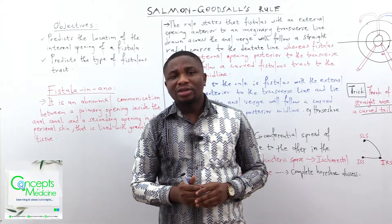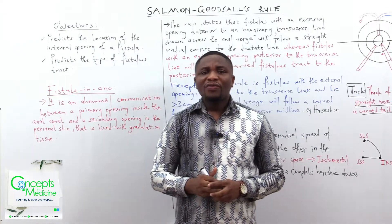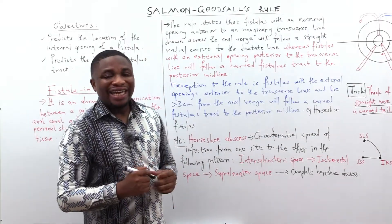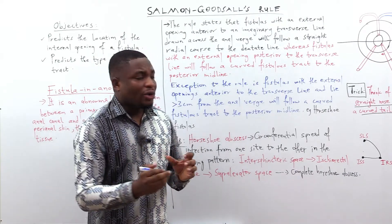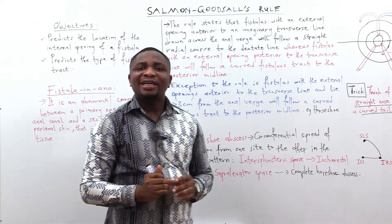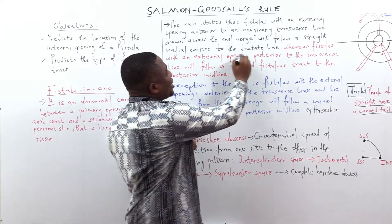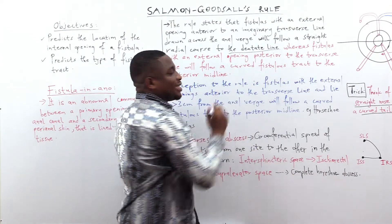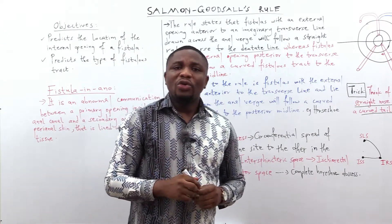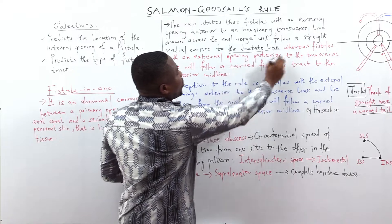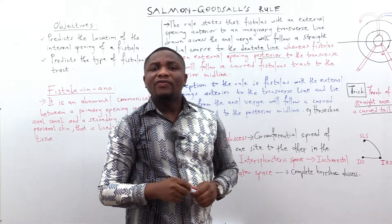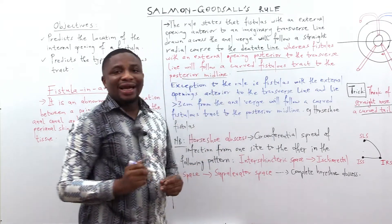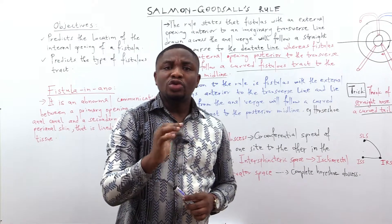Let's move ahead and talk about the Salmon-Goodsall Rule. It states that fistulas with an external opening anterior to an imaginary transverse line drawn across the anal verge will follow a straight radial course to the dentate line. Whereas, fistulas with an external opening posterior to the transverse line will follow a curved fistula's tract to the posterior midline.